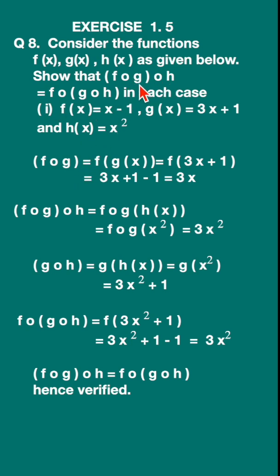Let us now take the LHS. Let us first find out f∘g. f∘g is equal to f(g(x)). Write down g(x) = 3x + 1. Now we have to find out f(3x + 1). Wherever x is there in f(x) = x - 1, you substitute by 3x + 1. So you get 3x + 1 - 1. This x becomes 3x + 1, so you get 3x. This is f∘g.